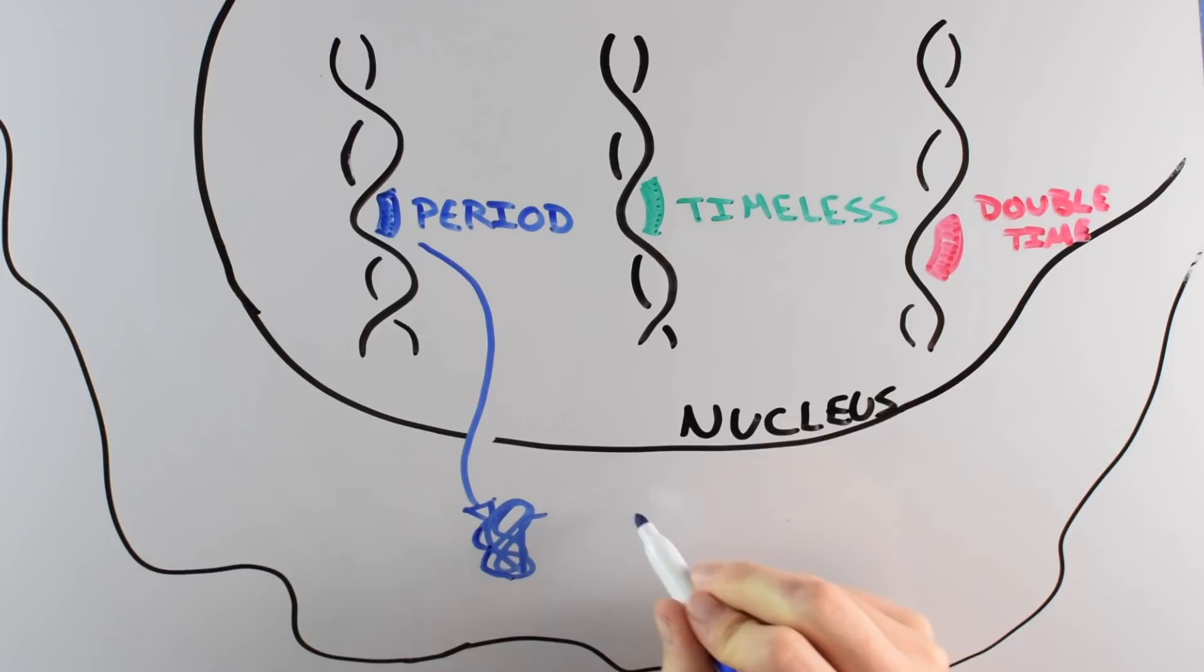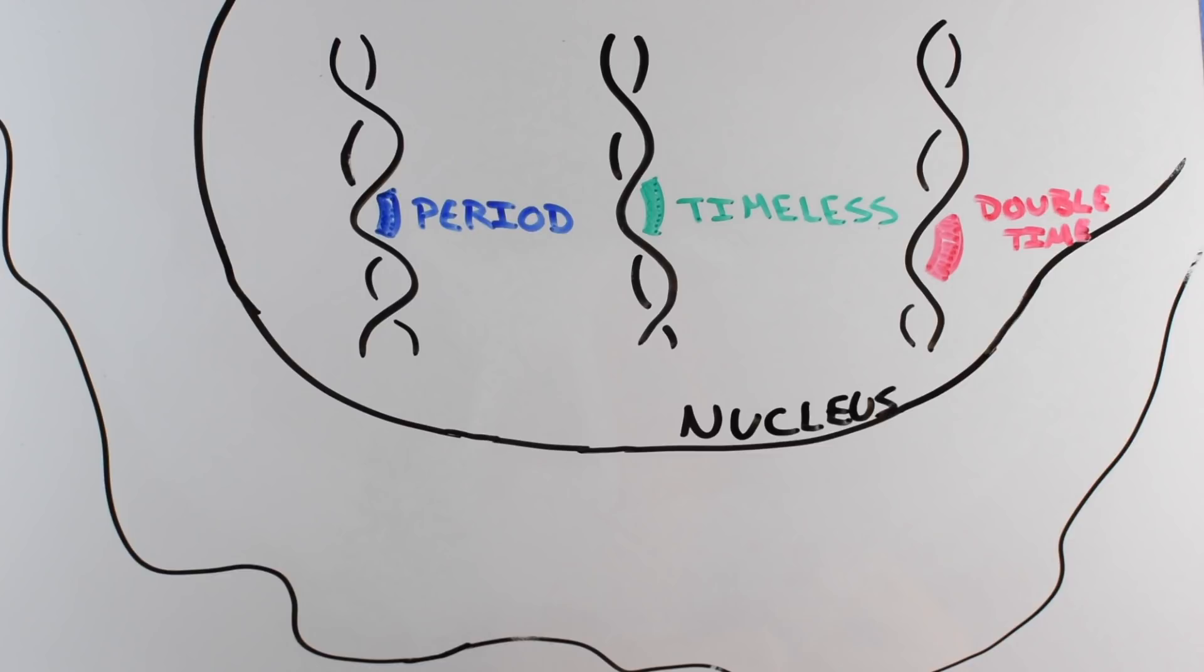The period gene starts making the period protein. The double time protein limits the stability of period so it doesn't build up too quickly. Timeless shows up and starts teaming up with period to move into the nucleus, and period shuts down its own production. But once the amount of period in the cell gets too low, the whole process starts up again. A calm, cool, and collected 24-hour cycle.